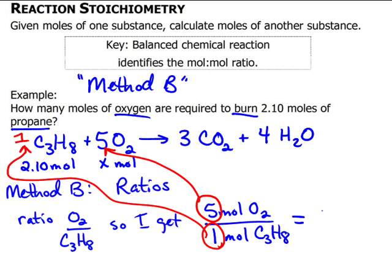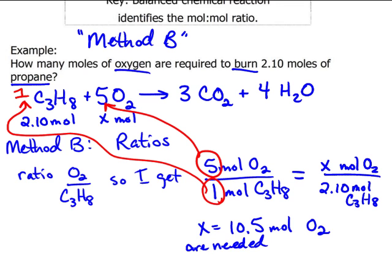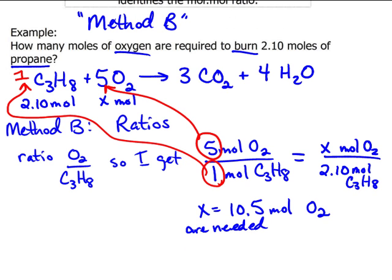So for every 5, I need 1. How many moles of O2 do I need if I have 2.10 moles of C3H8? I can cross-multiply and solve for X. So I get X is 10.5 moles of O2 are needed. I'm going to write it in complete sentences because it's just a really good study technique.